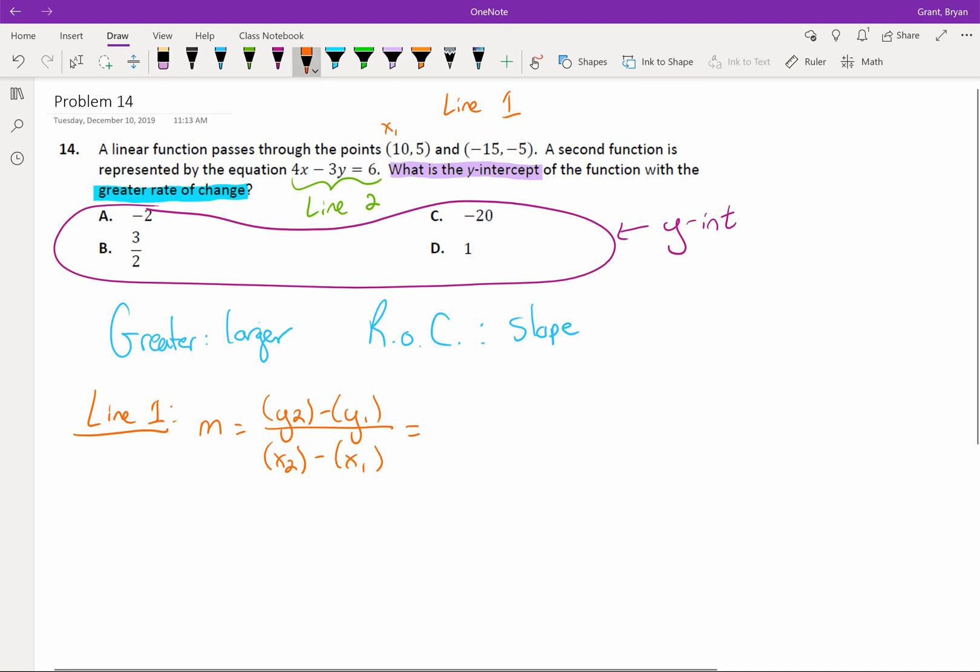How do we start plugging things in? I'm going to get rid of this right now and start labeling my points. 10 is my first x, 5 is my first y. Points do go x, y. Negative 15 is my second x, negative 5 is my second y. Let's plug everything in. My second y is negative 5, my first y is 5, and my second x, negative 15, my first x is 10. And then we put everything together. Negative 5 minus 5 is negative 10. Negative 15 minus 10 is negative 25.